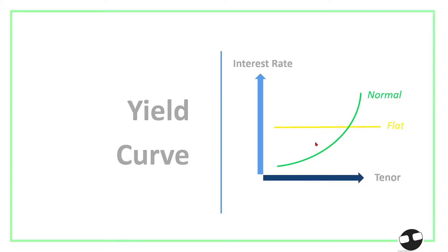If the yield curve is flat, that would signal uncertainties in the market. And an inverted direction of the yield curve actually tries to indicate an upcoming recession or economic downtrend. So this is used as a signal or leading indicator by analysts to predict economic activity.